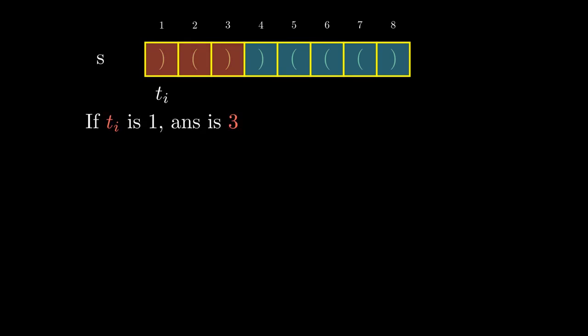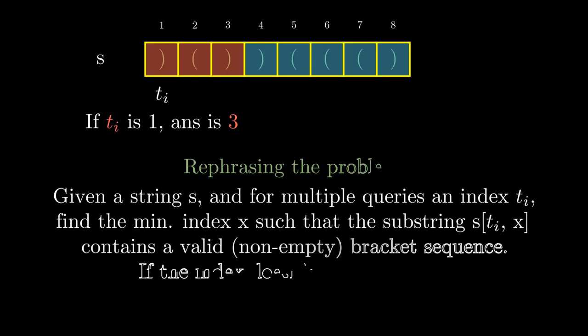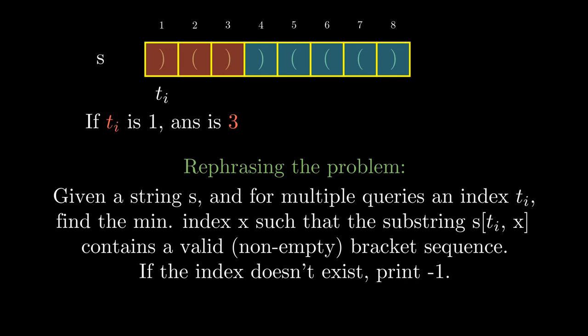Let's rephrase the problem. Given a string s and for multiple queries an index ti, we have to find the minimum index x such that the substring ti to x contains a valid non-empty bracket sequence. If it does not exist, we have to print -1.